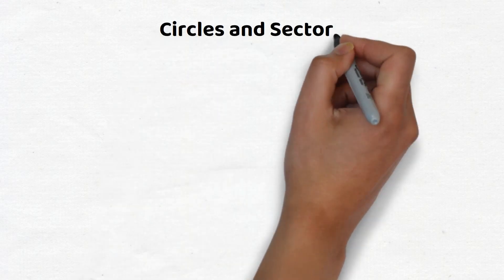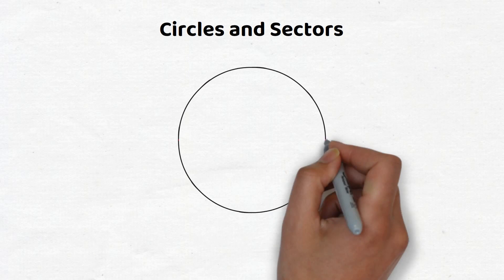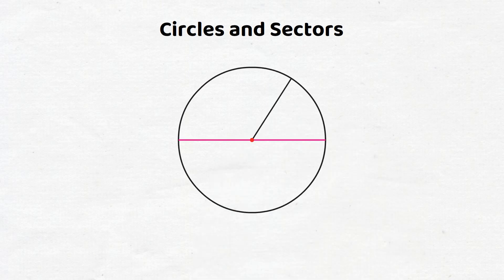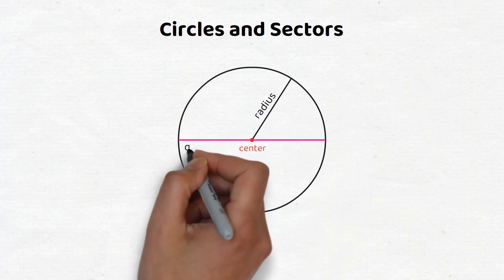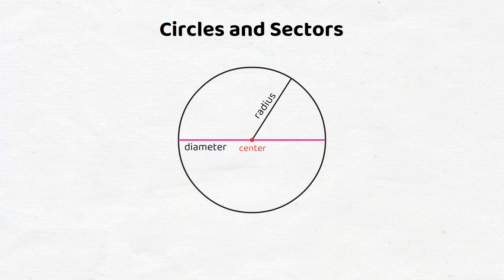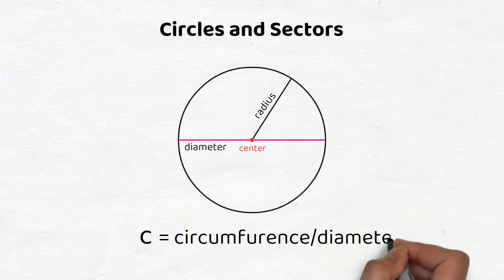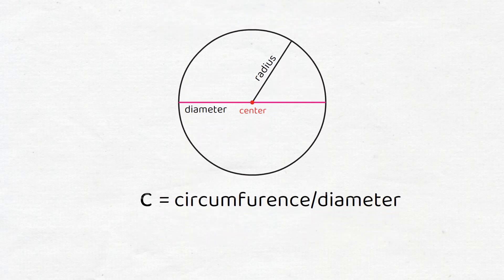Circles and sectors. A circle is a collection of all points equidistant from a fixed point, called the center. The distance from the center to the outside of the circle is called the radius. The line segment through the center of a circle is called the diameter. The circumference is the total length around the circle. A fundamental property of circles is that the circumference divided by the diameter is the same quantity for every circle, no matter how big or small the circle and its circumference is.